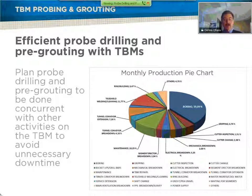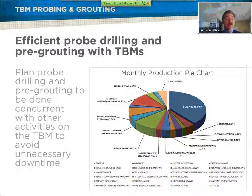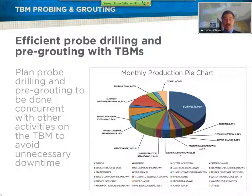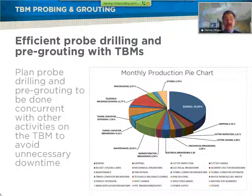Drilling and grouting does consume time, and time is valuable in a tunnel. Looking at machine utilization, the percentage of time the cutter head is actually turning is usually about 35 to 40%. The idea is to use the other downtime to do the drilling so you don't affect machine utilization. Probe drilling, if not planned properly, can be a fairly intrusive activity — the drills are very noisy, machinery is being moved, and you have to beware of the flushing coming out.